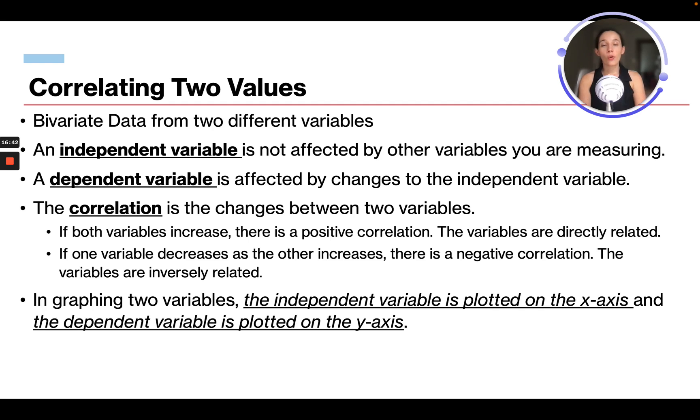And the correlation is when you're calculating different statistics and measuring data. A correlation is the change you find between the two variables. If both variables increase, there's a positive correlation. The variables are directly related. If one variable decreases and the other increases, there is a negative correlation and the variables are inversely related. In graphing two variables, the independent variable is plotted on the x-axis - that's the horizontal. And the dependent variable is plotted on the y, the up and down.